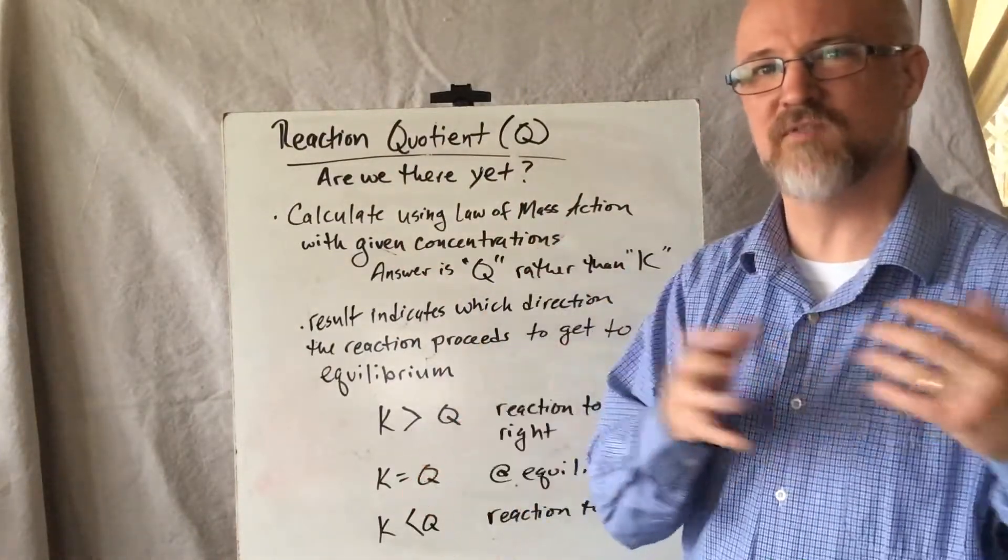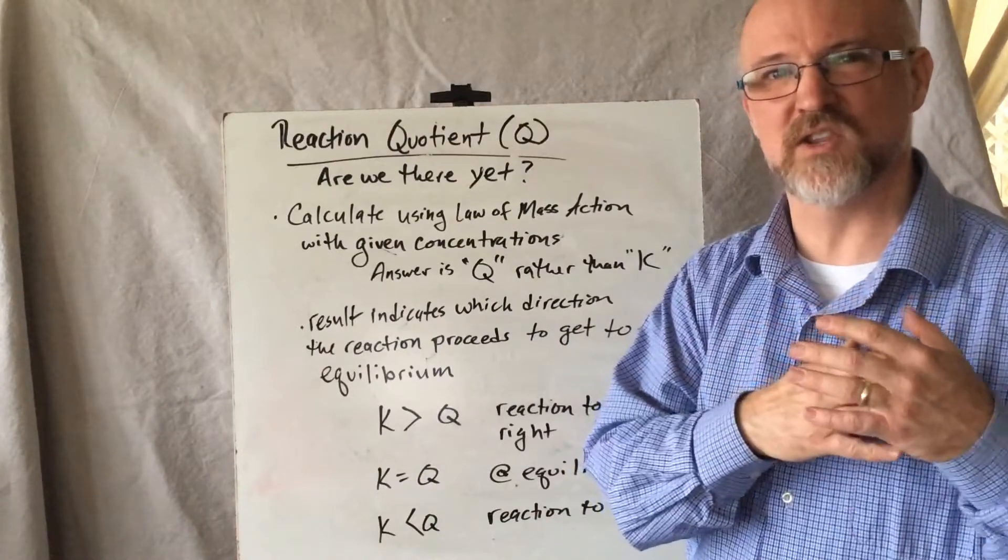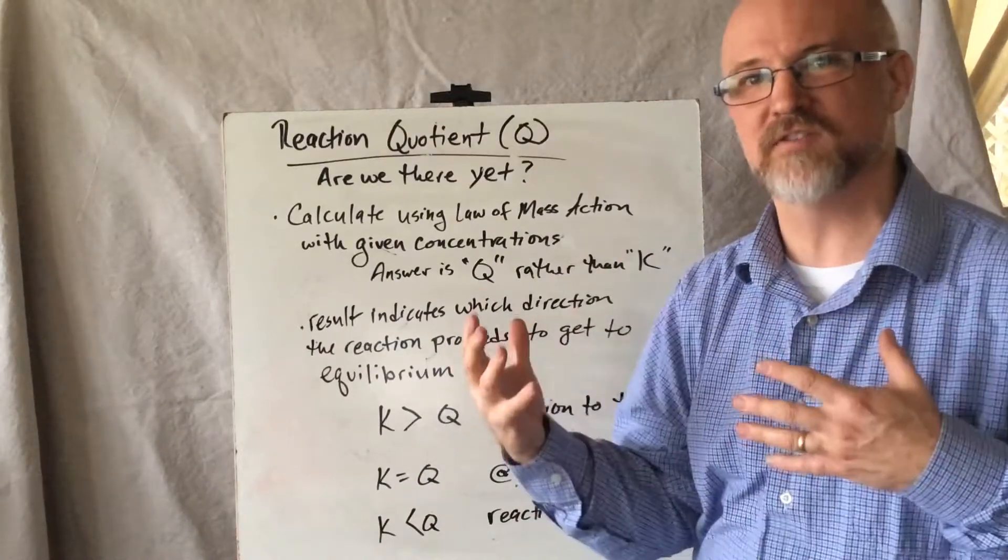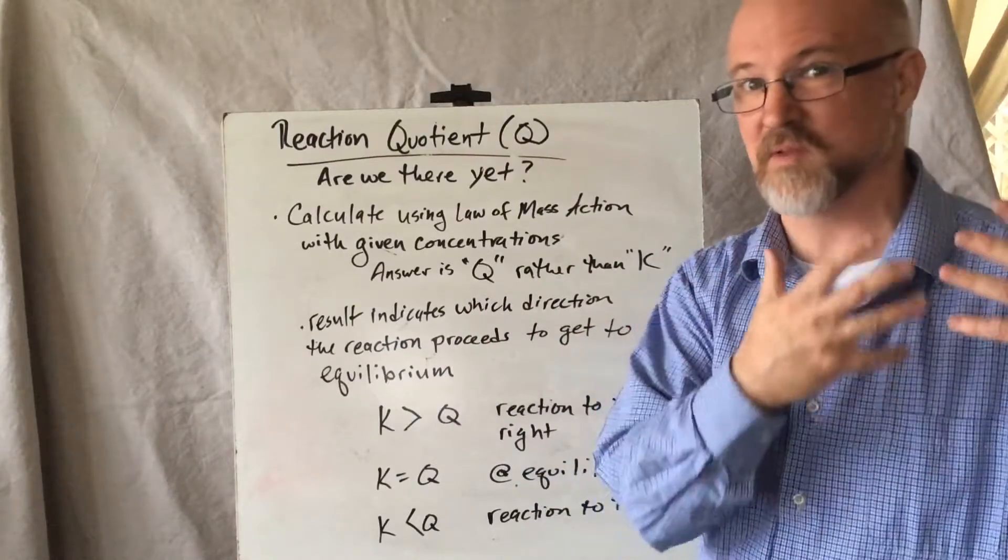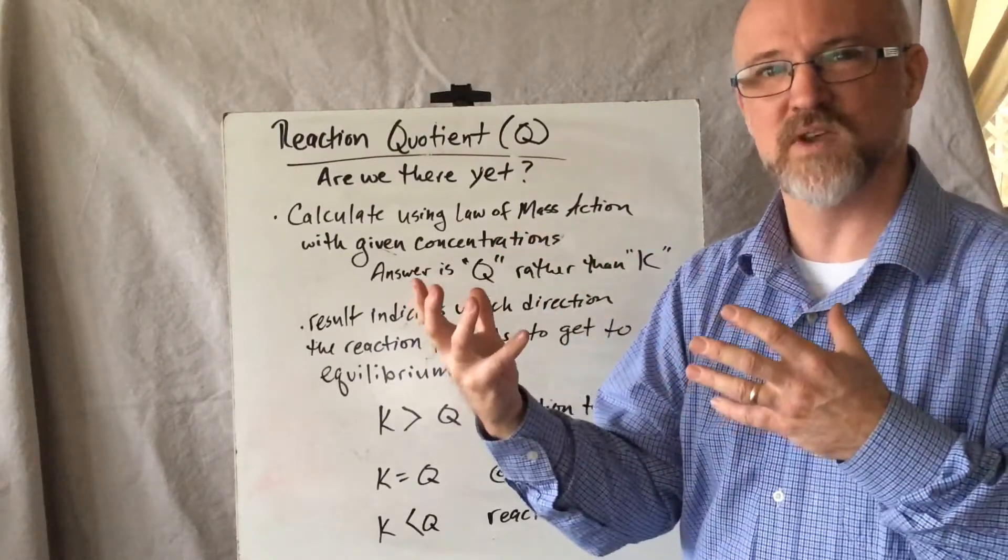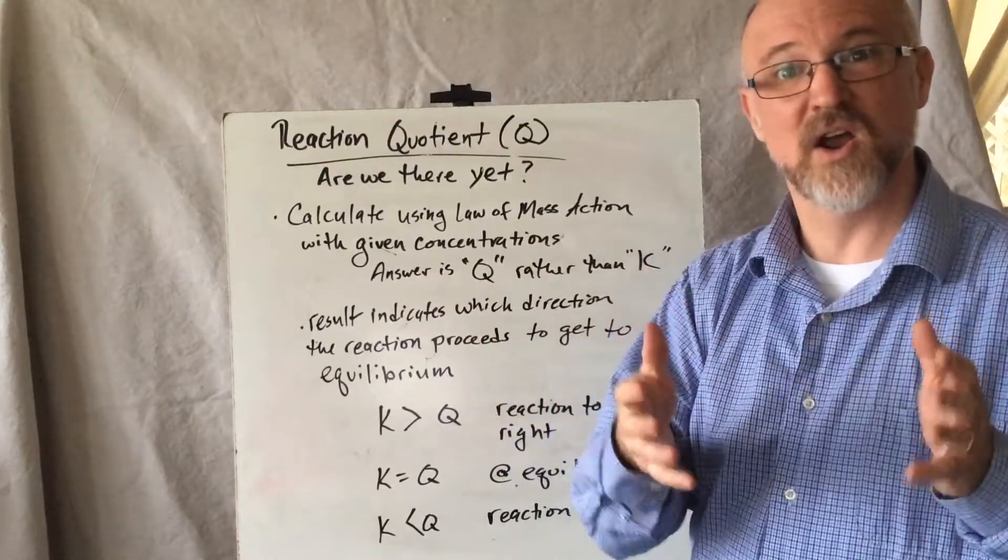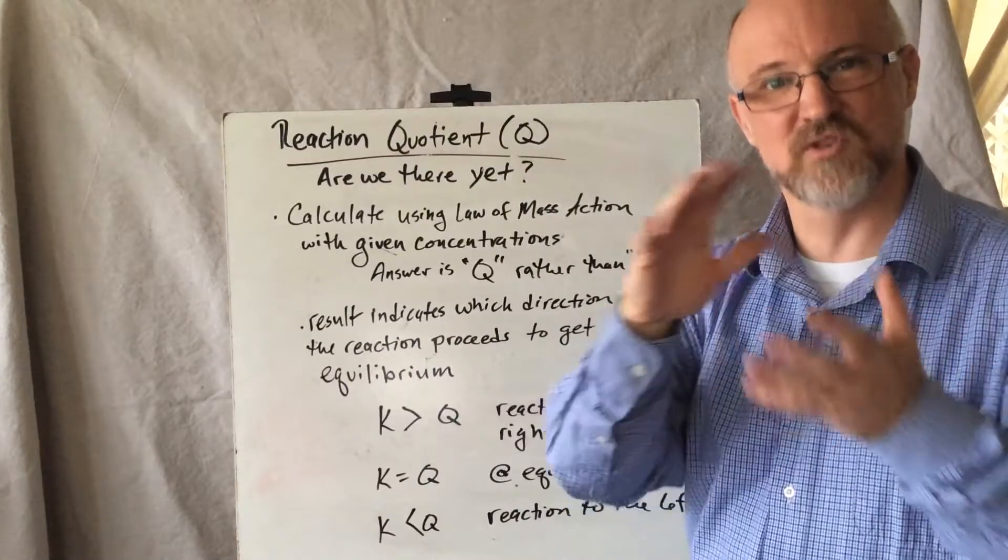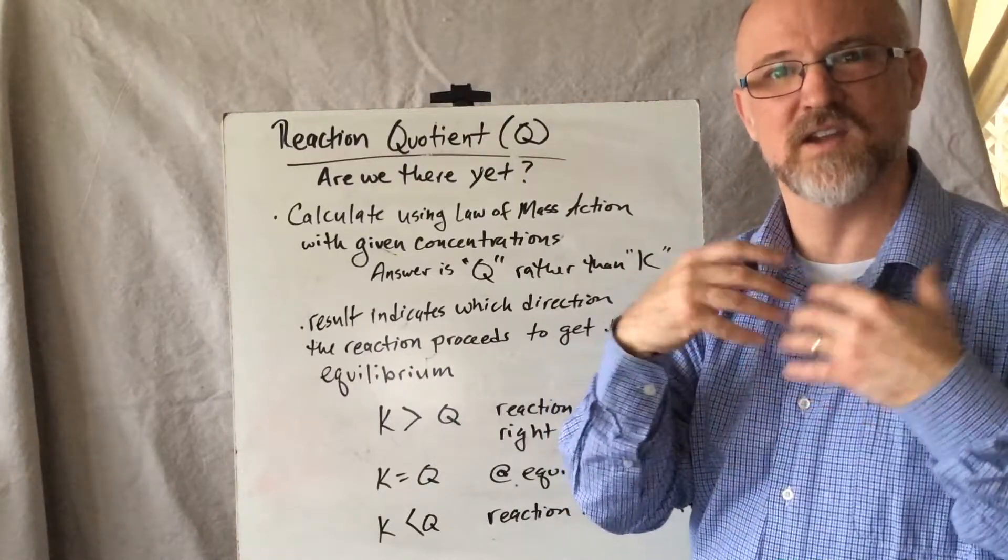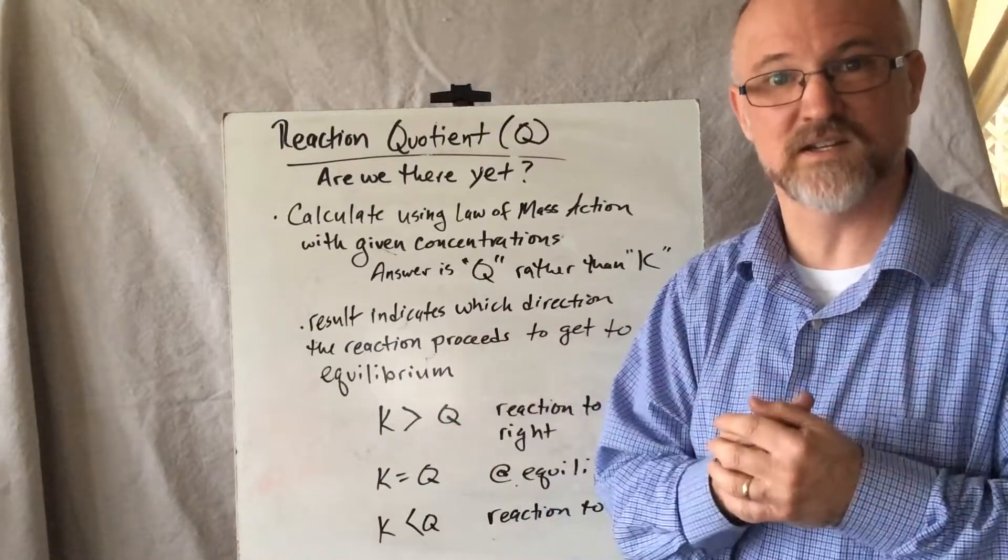Does the reaction need to proceed forward to get to equilibrium? Does it need to proceed in the reverse direction or to the left because we have more product than we would at equilibrium? So some of the product is going to turn into reactant preferentially. Or are we already there? Are these concentrations the ratio of concentrations that exist at equilibrium for this reaction under the specified conditions?